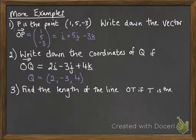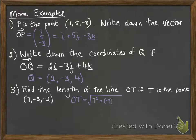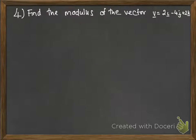Now find the length of OT if T is this point 7, minus 3, minus 2. So we're finding the length, that means the modulus of the vector OT. Okay, number 4 is a similar sort of question. Find the modulus of this vector V.